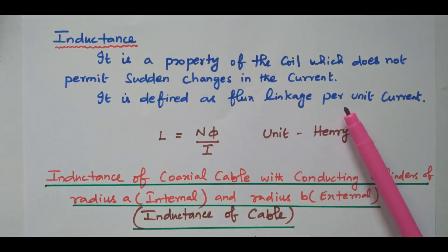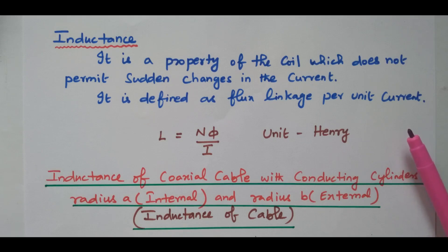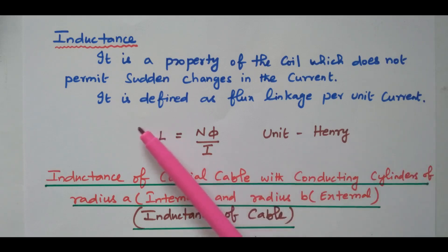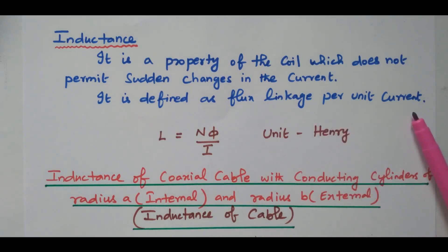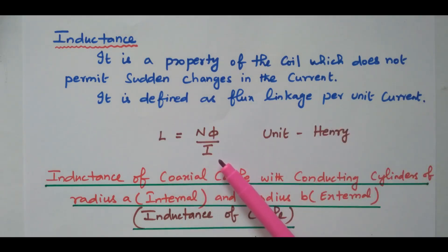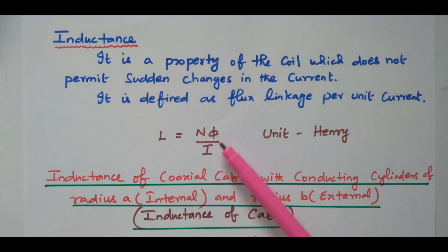The inductance is nothing but a coil. The main property of the inductor is it will not allow sudden change in current — current will increase gradually or decrease gradually. It is defined as flux linkage per unit current. That is L equal to N·π divided by I. This N·π is nothing but flux linkage divided by current.